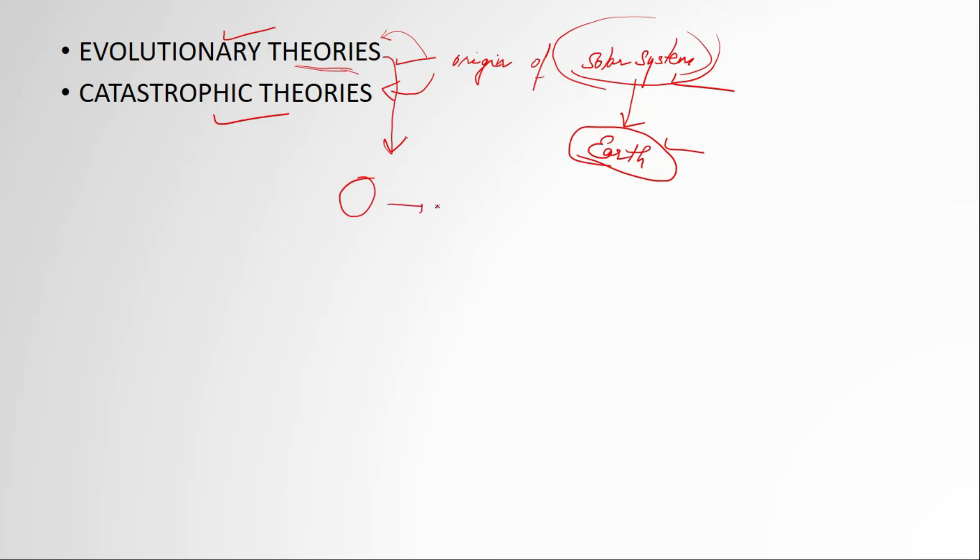They're actually saying that during the evolution of the Earth, the formation of these planets was taking place simultaneously. One of the examples of evolutionary theories is the nebular hypothesis. We'll be looking at this nebular hypothesis in a proper manner.